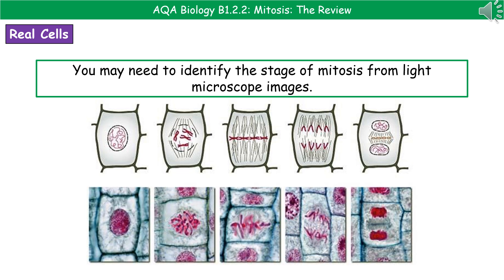In the next image along, we can see the chromosomes starting to be pulled to the opposite poles, and you can just about make out the faint lines of the spindle fibres. So again, the cell is undergoing mitosis as the chromosomes are being pulled to the opposite poles. Do look at a range of different light microscope pictures online to get more familiar with them.